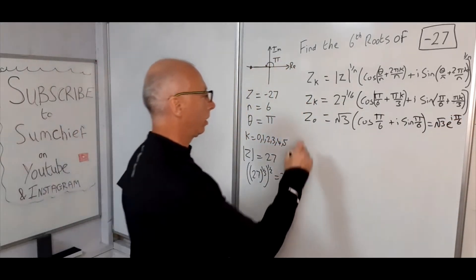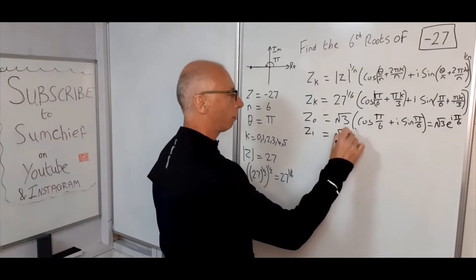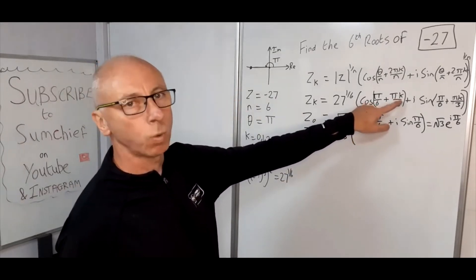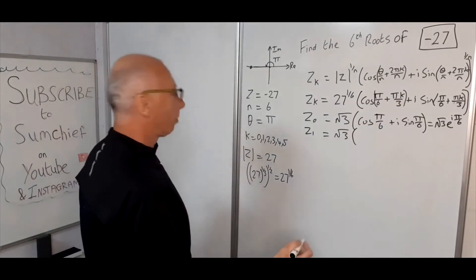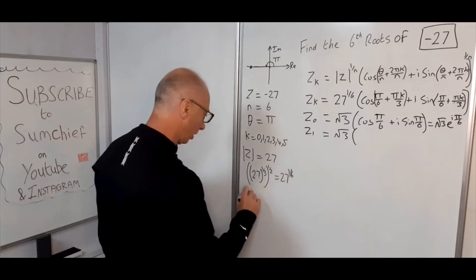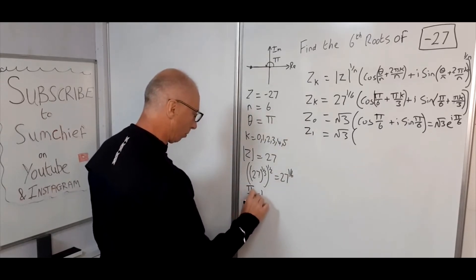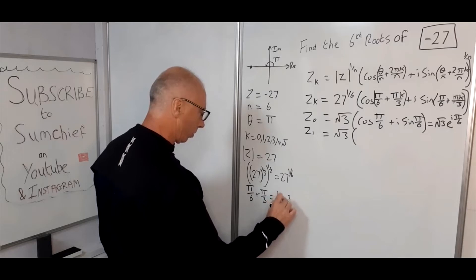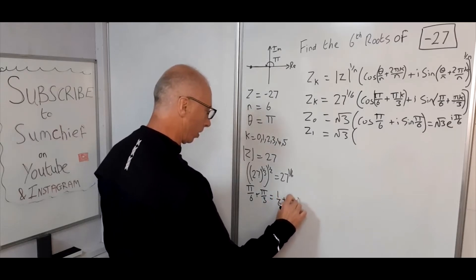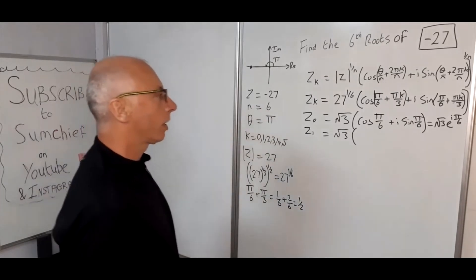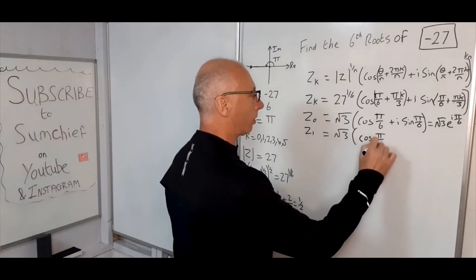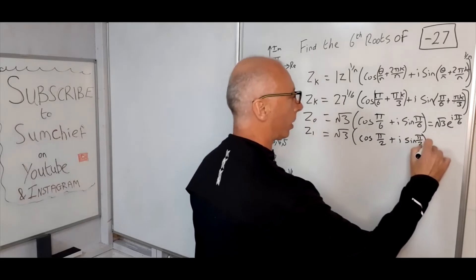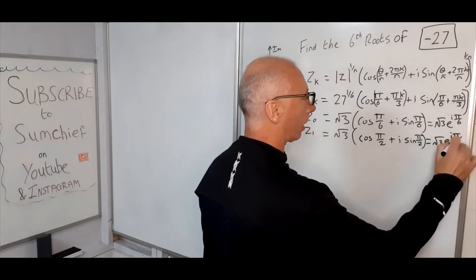For Z₁ (K = 1), the modulus stays the same. We get cosine of (pi over 6 plus pi over 3). That gives pi over 6 plus 2 over 6 equals pi over 2. So Z₁ = root 3 times (cosine pi over 2 plus i sine pi over 2), which equals root 3 e to the i pi over 2.